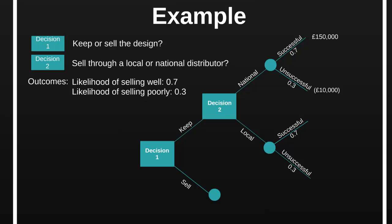In contrast, if we decide to go with the local distributor and our product is successful, we earn a lower profit of only £60,000. However, things look a bit better if our product is unsuccessful — if our product is unsuccessful and we've sold it through the local distributor, then we still make £30,000 of profit, according to our sales and marketing team's forecasts. Meanwhile, talks are ongoing with our competitor, who still want to purchase the design for our new product, and they've offered us £50,000.